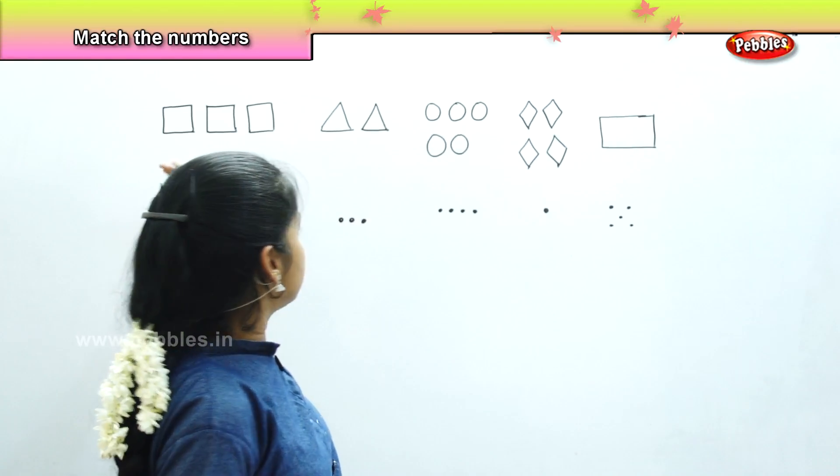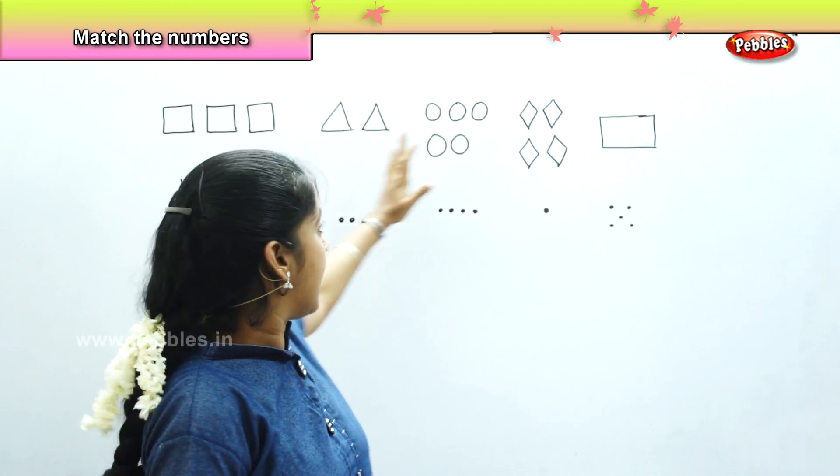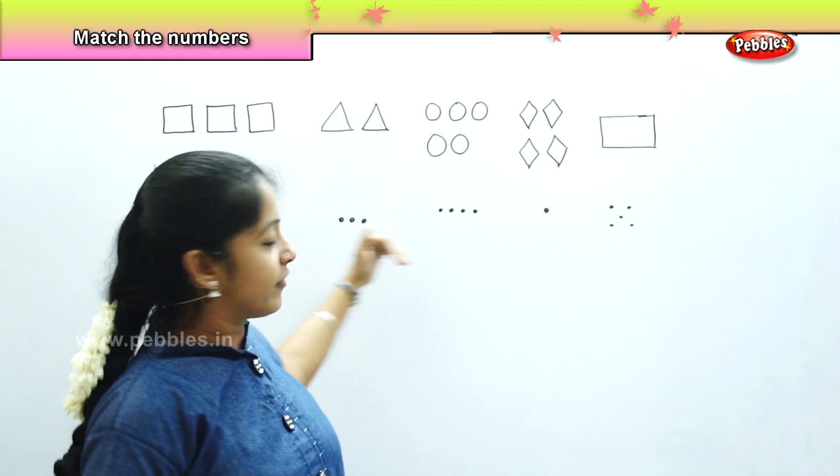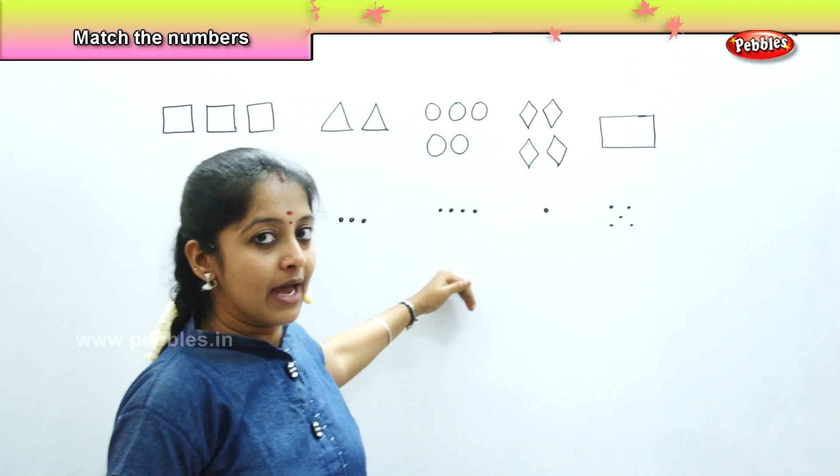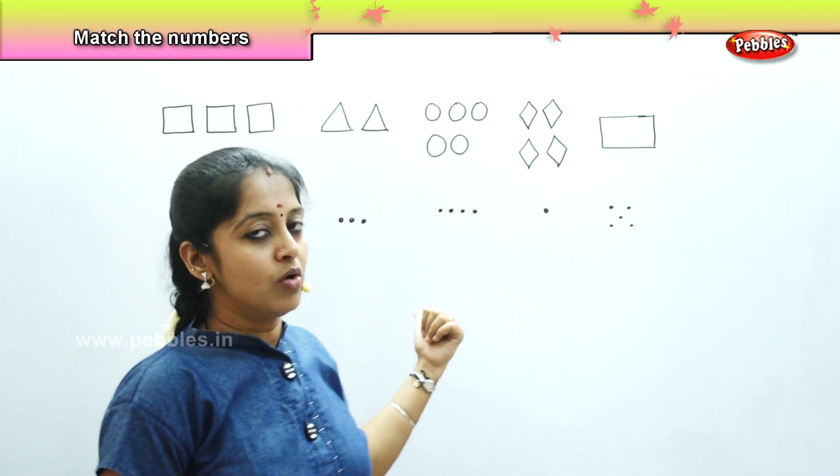Now, here, if you see, I have drawn few objects and I have also given few dots. Now, we have to count the object and match it with the respective dots.